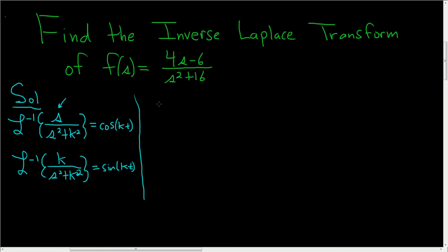Okay, so to do this problem, we will just take the inverse Laplace of the whole thing. So 4s minus 6 over s squared plus 16. And then we'll break this up. This is the inverse Laplace of 4s over s squared plus 16 minus 6 over s squared plus 16.